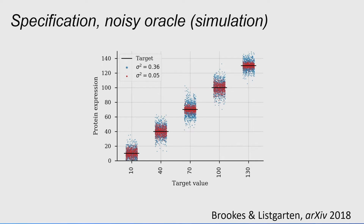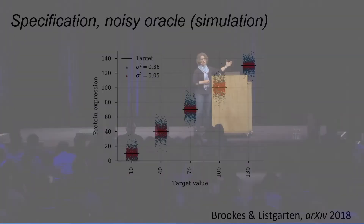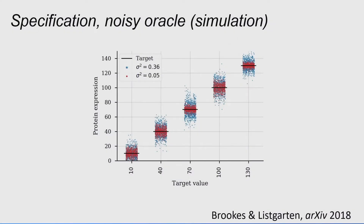Something others haven't tackled is the specification problem. Rather than just maximizing yield, there are many places where we want to specify a desired range — for example, in protein stoichiometry you want to create things in particular ratios, and for biological circuits there are many such constraints. This is proof of principle that we can specify a range and design a sequence that achieves it. Interestingly, as the noise of the oracle gets bigger, the range gets worse — exactly what we'd expect from a more uncertain predictive model.